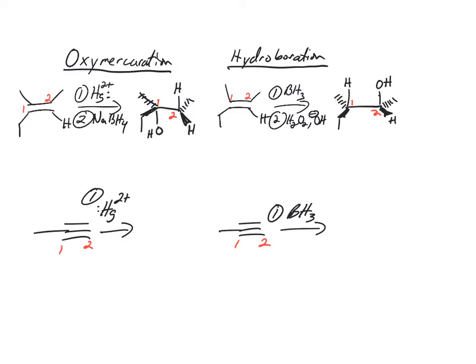The OH ends up on the more substituted carbon, carbon-1 here. You get trans or anti stereochemistry - they add on opposite sides. Hydroboration: there are no carbocations. You make the anti-Markovnikov product where the OH adds to the less substituted carbon, you get syn stereochemistry - a syn addition where the OH and the H are on the same side.